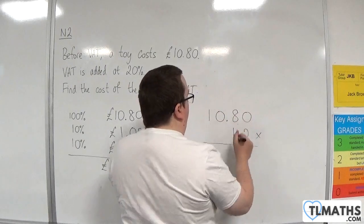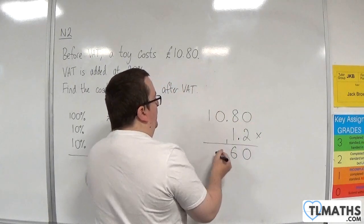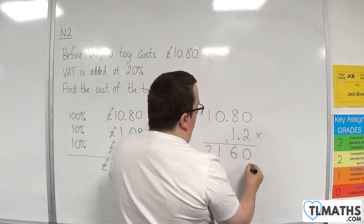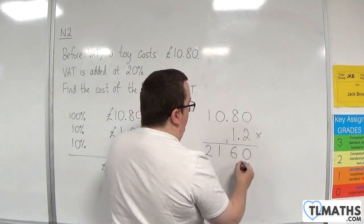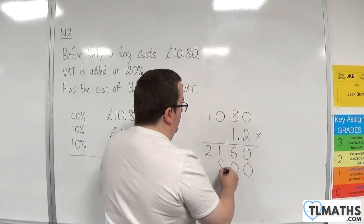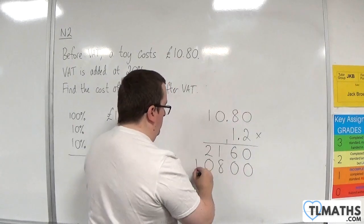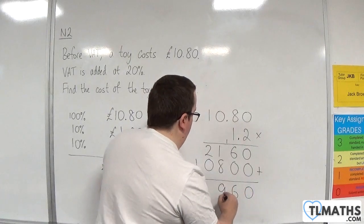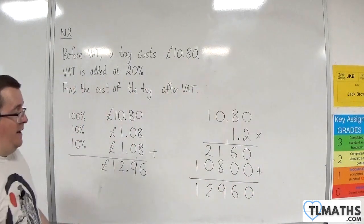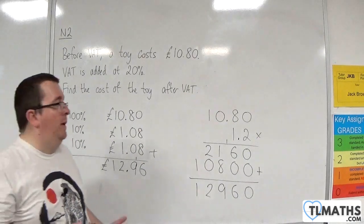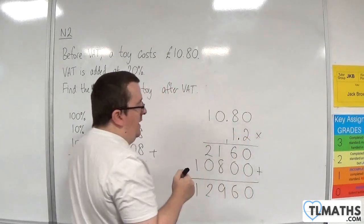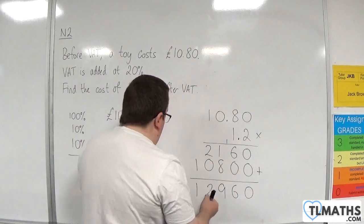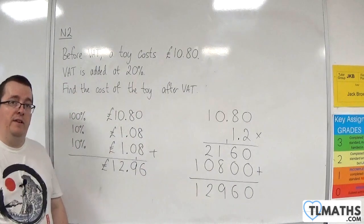So I should be able to get the same amount here. Two times zero is zero, two times eight is sixteen — put down the six carry the one, two times zero plus the one, two times one is two. Then multiplying by ten: put in zero, one times zero, one times eight, one times zero, one times one. Adding those two amounts together we get zero six nine two one, and then I need to put in the correct number of decimal places — I've got one two three numbers to the right of the decimal point, so I go in one two three and I get the same amount: twelve pound ninety six.